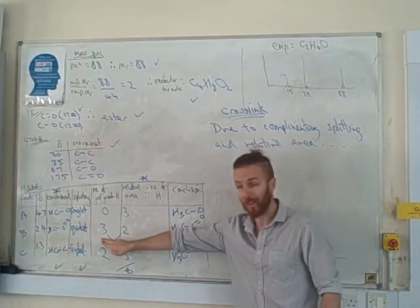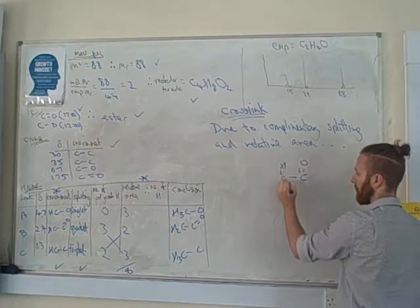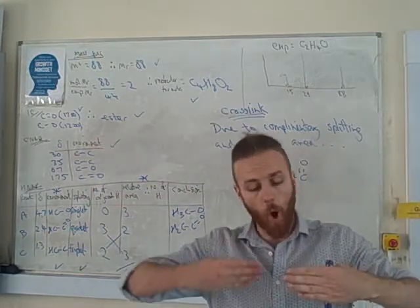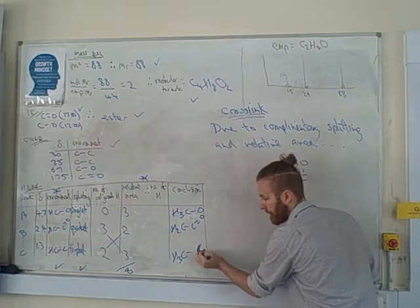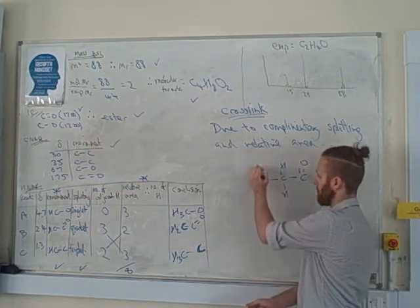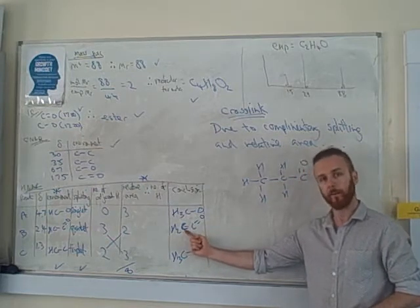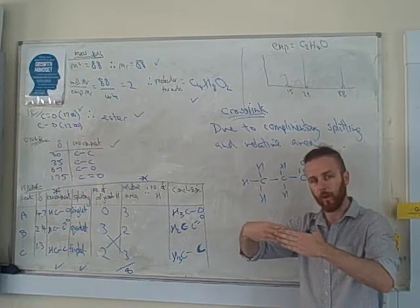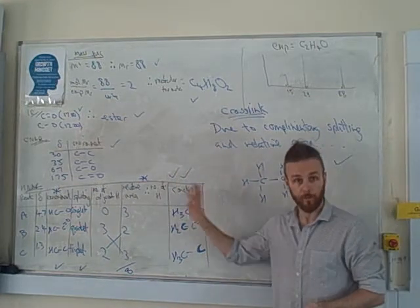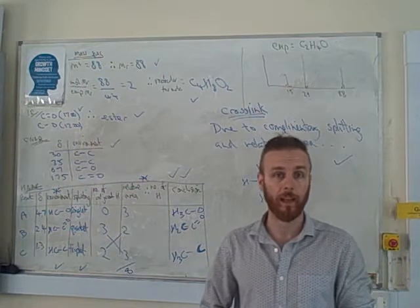You can only put the cross between two different environments, not three or four. The cross has to be between a maximum of two environments, or exactly two. So due to our complementary splitting and relative peak area, we can say that this environment here is next to this environment here. When you're putting your jigsaw pieces together, often they overlap. You see this carbon here? That is this carbon here. We're saying we've got a CH3 next to a carbon. Here's the CH3. It's next to a carbon. The carbon it's next to is that carbon. So we've slotted them together, but they often slightly overlap.